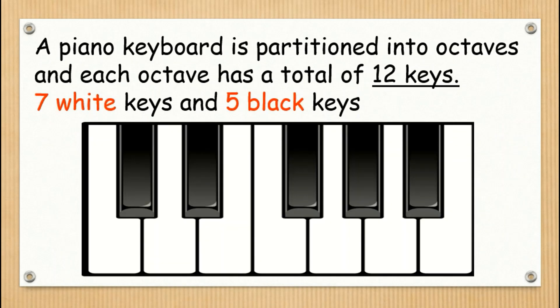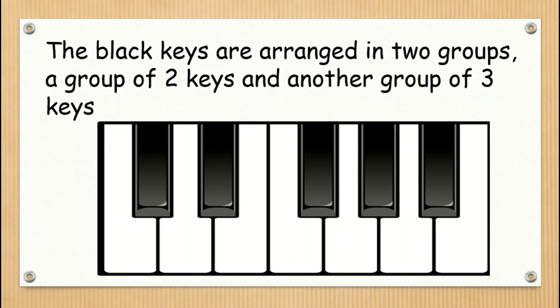A piano keyboard is partitioned into octaves and each octave has a total of 12 keys: 7 white keys and 5 black keys. The black keys are arranged in two groups, a group of two keys and another group of three keys.